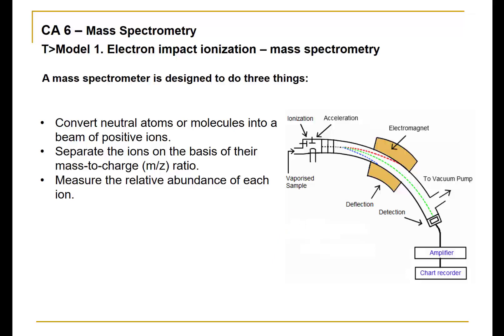The sample is then bombarded by an electron gun that projects a stream of high energy electrons. The goal is to knock out a single electron from each molecule, thereby ionizing them to a radical cation.